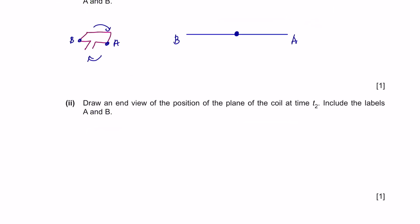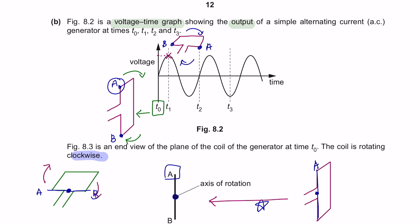Part 2. Draw an end view of the position of the plane of the coil at time T2. Include the labels of A and B. Now let's see what is the position of the plane at T2. At T2, the voltage is zero, meaning that the position of the coil must definitely be in a vertical position. We just have to find out the terminal positions. T2 here is one complete rotation starting from T0, meaning that it would have come back to its original position. It will be the same as how it began, A at the top and B at the bottom.